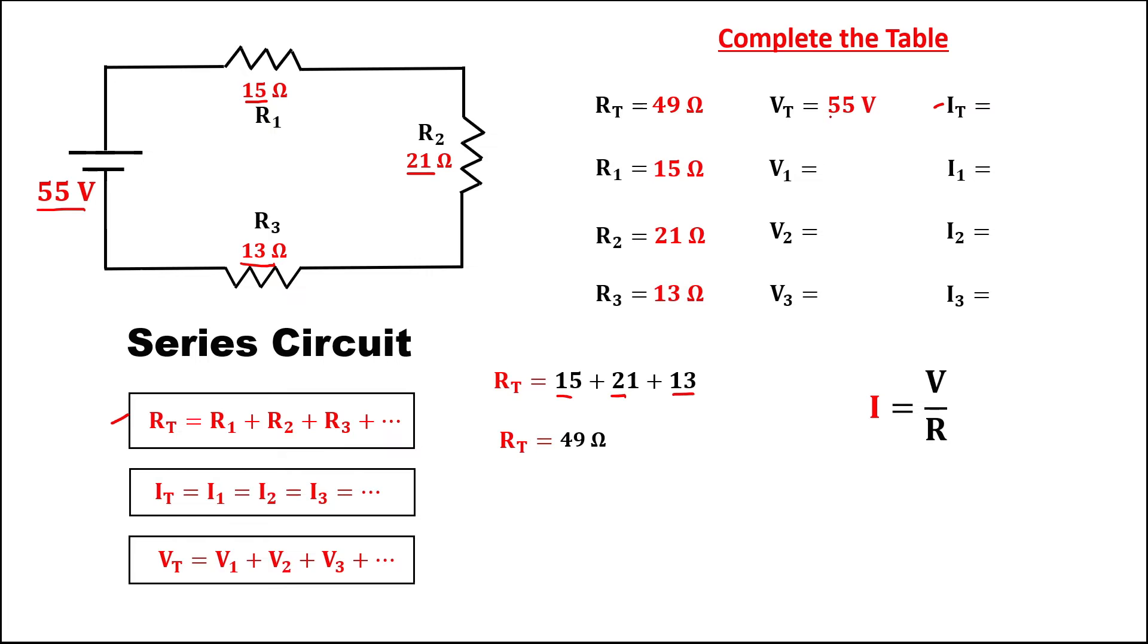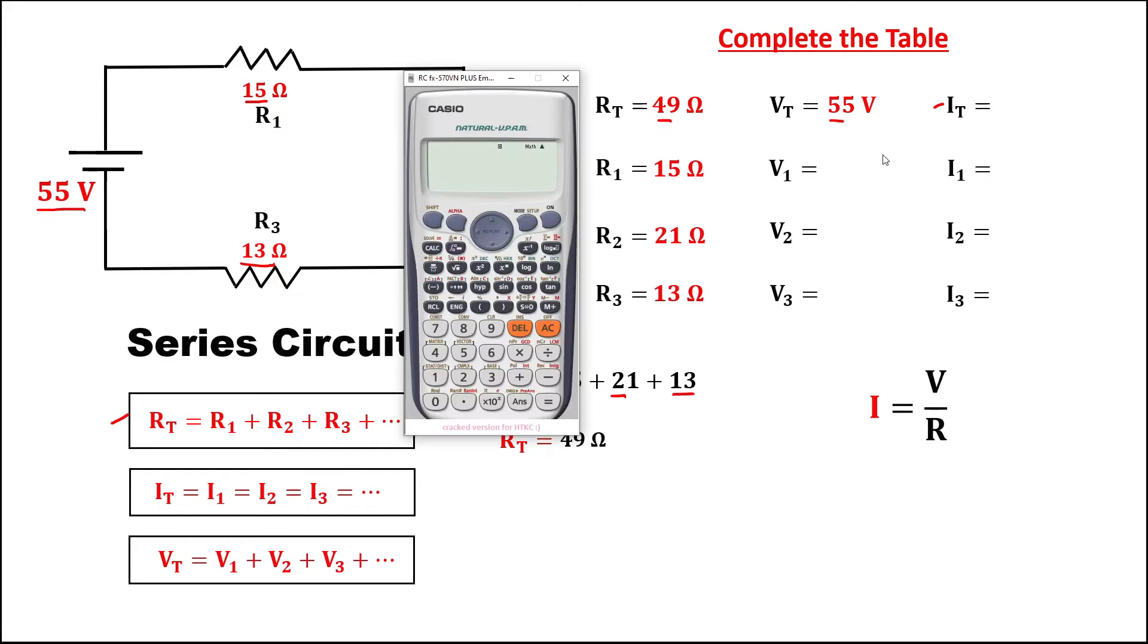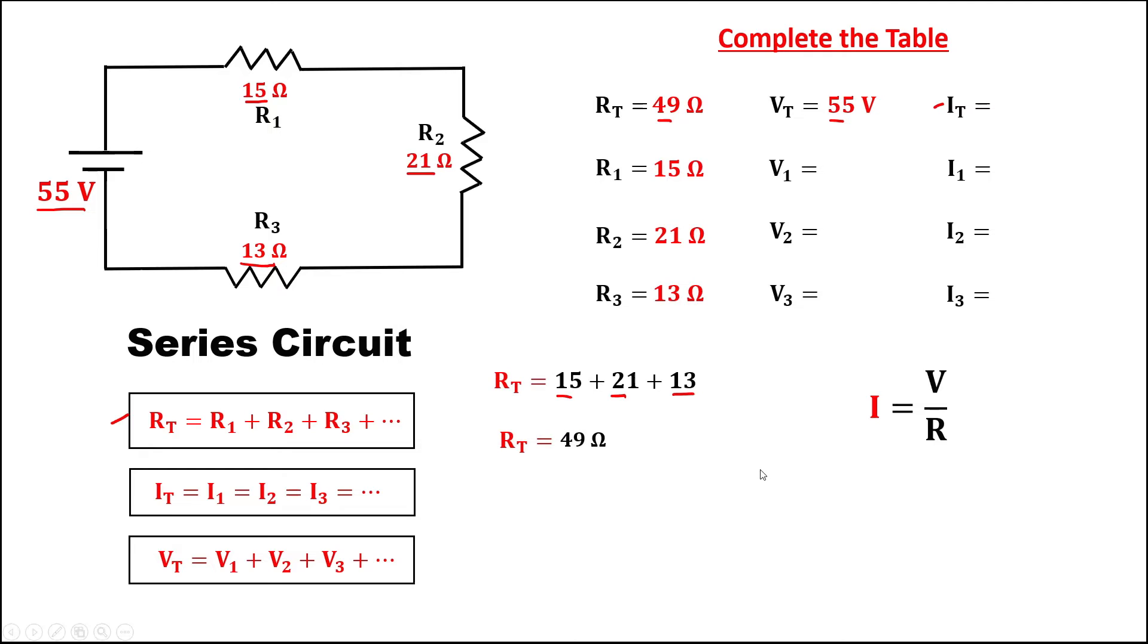so this becomes 55 divided by 49. So we have 55 divided by 49 equals, so the total current is 1.12 Ampere.